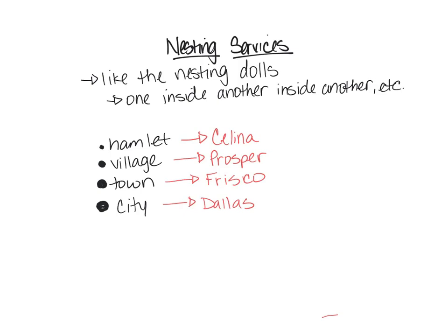Think about how much Frisco has grown: we used to have one hospital near Bicentennial, now there's one by Wakeland connected to Baylor. One movie theater in the mall, now another nearby. One Target, now two. Four Walmarts. That's nesting services in action — and it shapes decisions about where to open new stores.